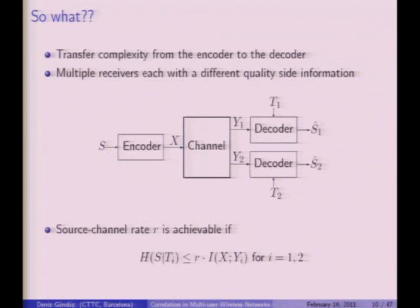This is an if-and-only-if result — it's the best you can do. The only remaining optimization is over the channel input distribution P_X, which must work for both users. If the channel is such that the same input distribution is optimal for both receivers, each user operates as if it's the sole user in the system — there's no loss from having an additional user, which would not be the case in a general Gaussian channel transmitting independent rates.